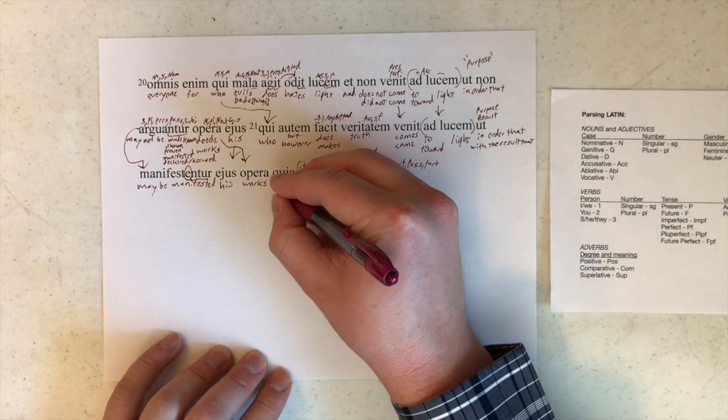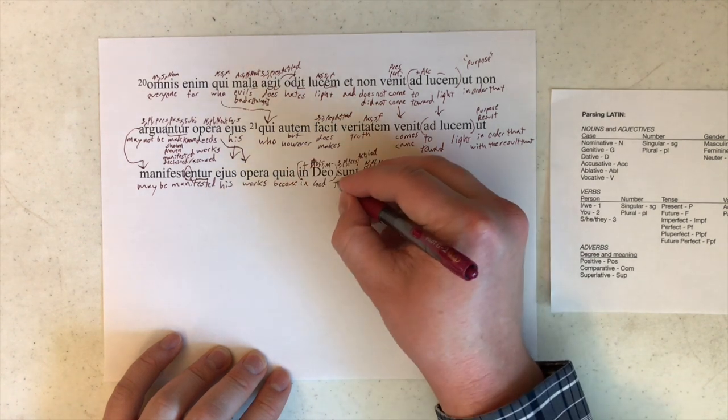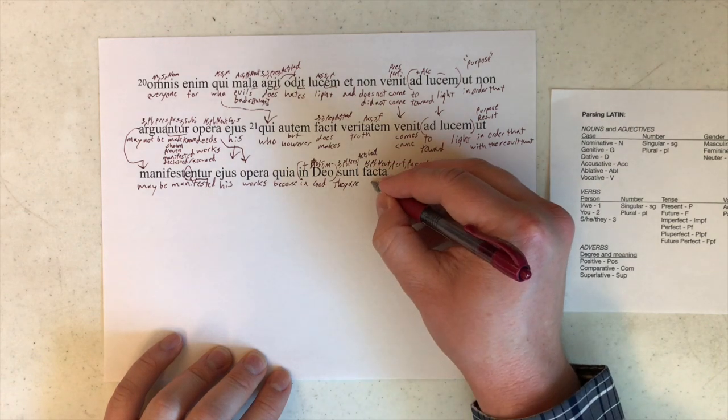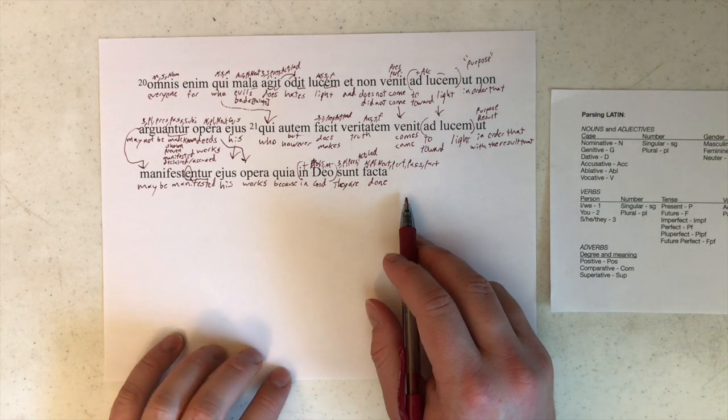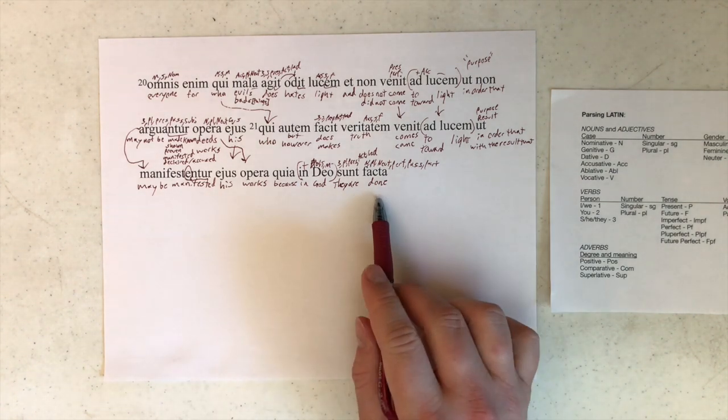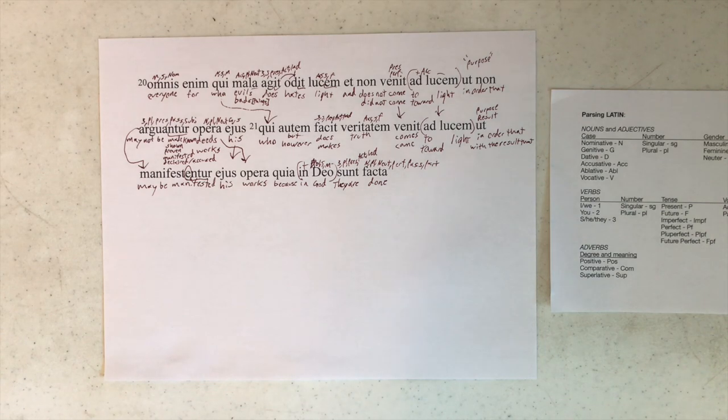I think because it makes more sense... we could do they have been done. But again, based on the location of sunt, I don't think that's the best way. I think, as we have it right now, is good, at the very least. So there's verse 21. Let's take a look at it in its own context.